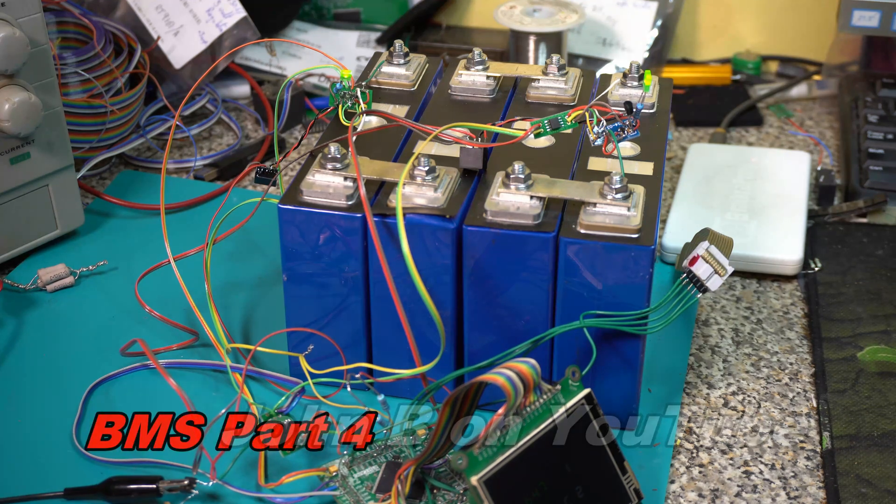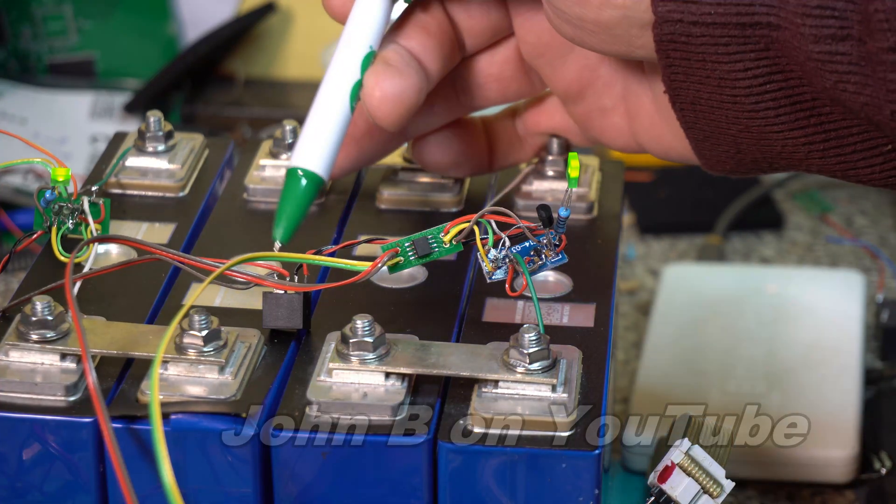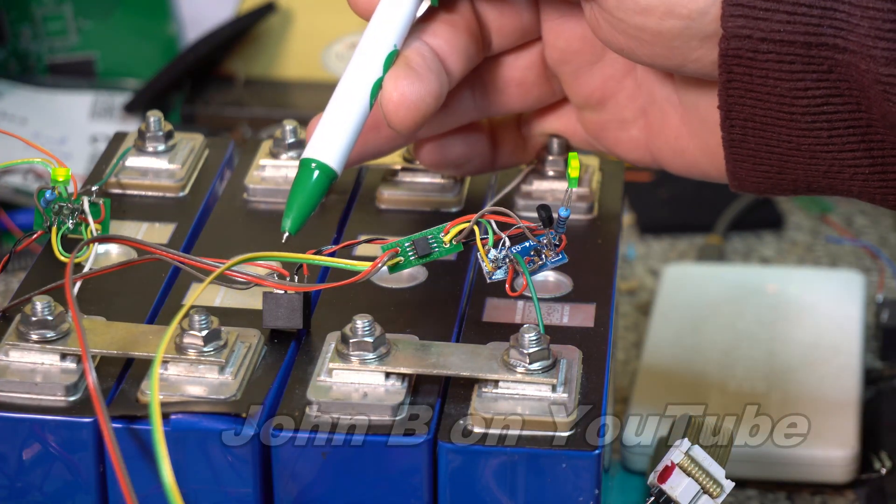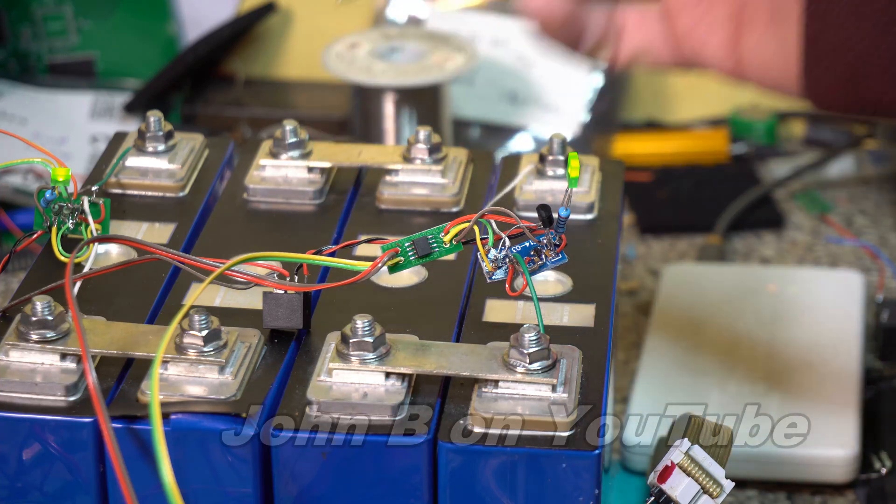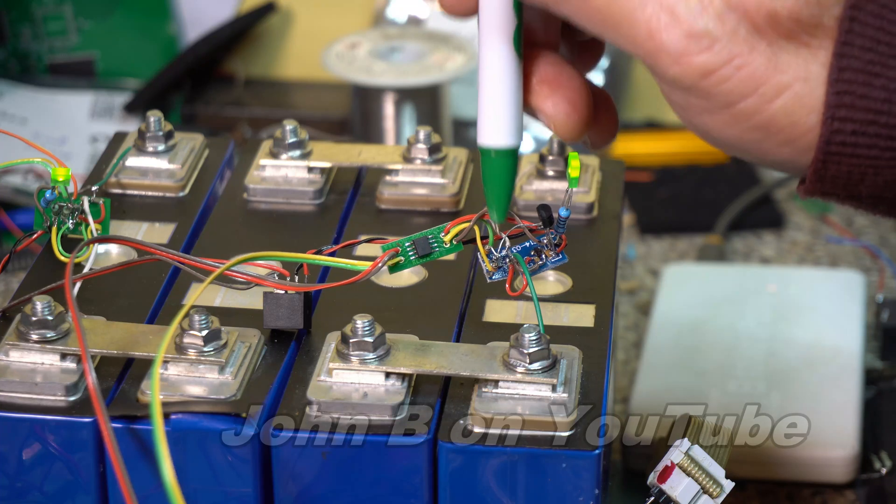Hi, welcome back. This is battery management design part four. In the last video, you saw I had one of these Murata DC to DC converters running into a voltage regulator, then a Microchip analog to digital converter, 12-bit.